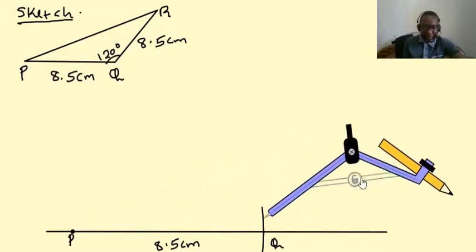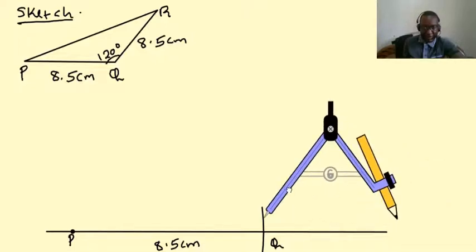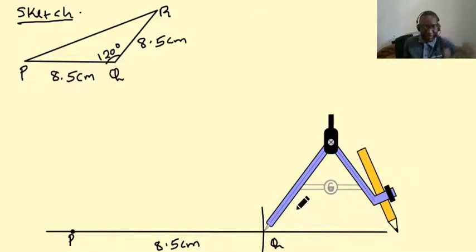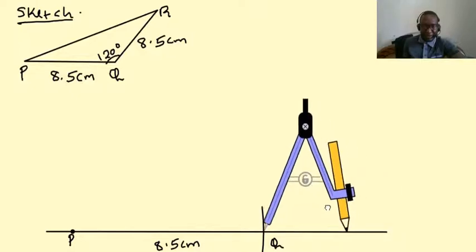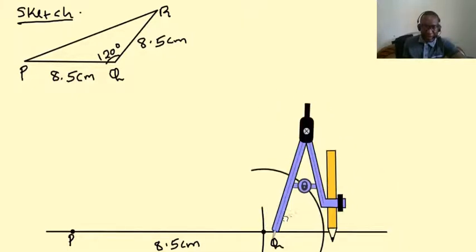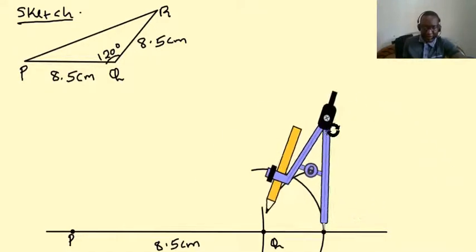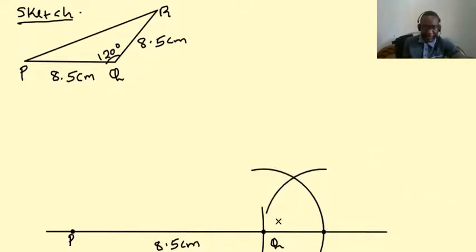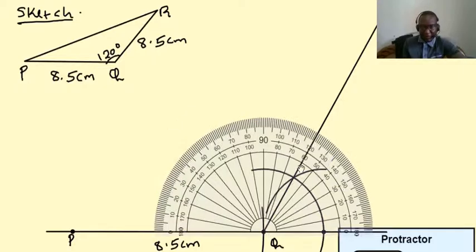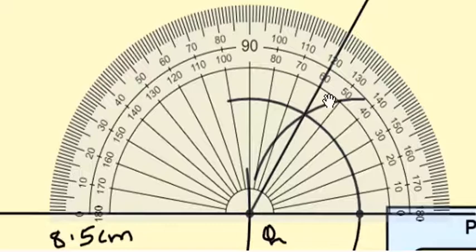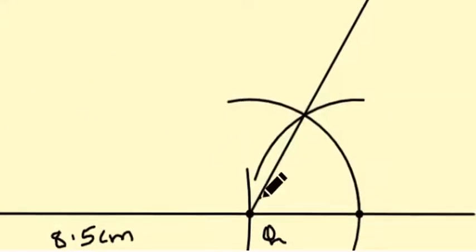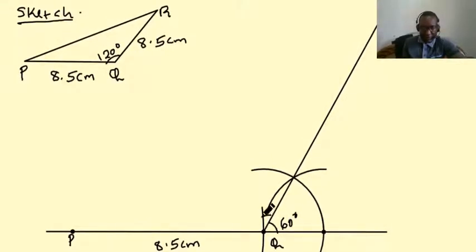Now at Q we need an angle of 120. So 120 can be got after drawing an angle of 60 degrees. So this side we are going to draw 60 degrees and whatever will remain will be an angle of 120. So we make that arc, then we shift our compass without adjusting to that arc, then we draw another arc which intersects there. Get a ruler and join. We can see that when you use the inner scale, this angle is 60 and the outer scale gives us 120.